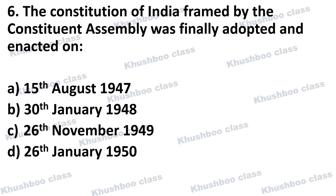Next question: The Constitution of India framed by the Constituent Assembly was finally adopted and enacted on — note the words 'adopted and enacted'. Option A: 15th August 1947, Option B: 30th January 1948, Option C: 26th November 1949, Option D: 26th January 1950. The answer is Option C, 26th November 1949.